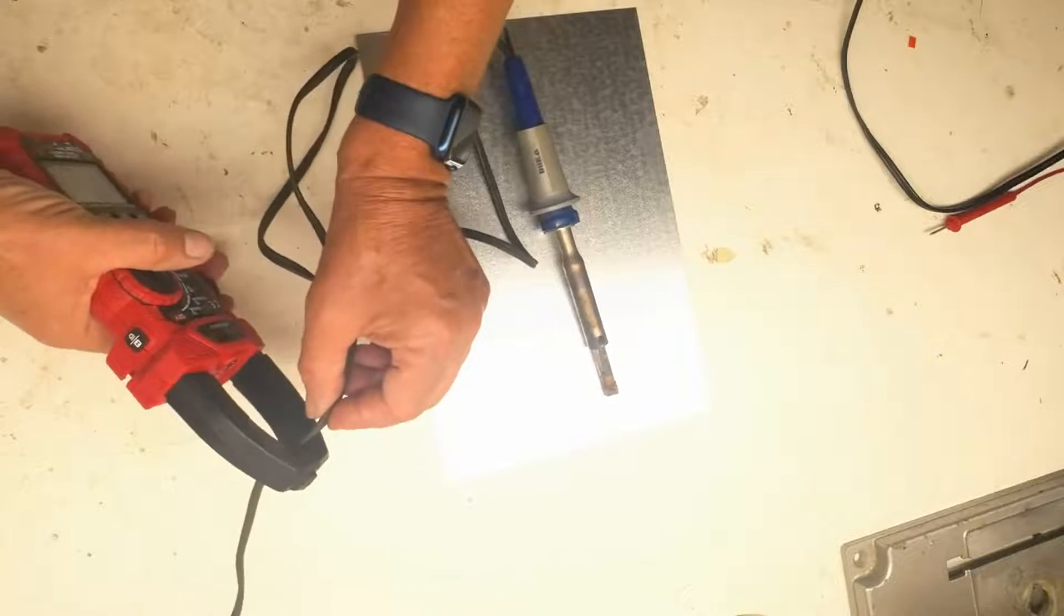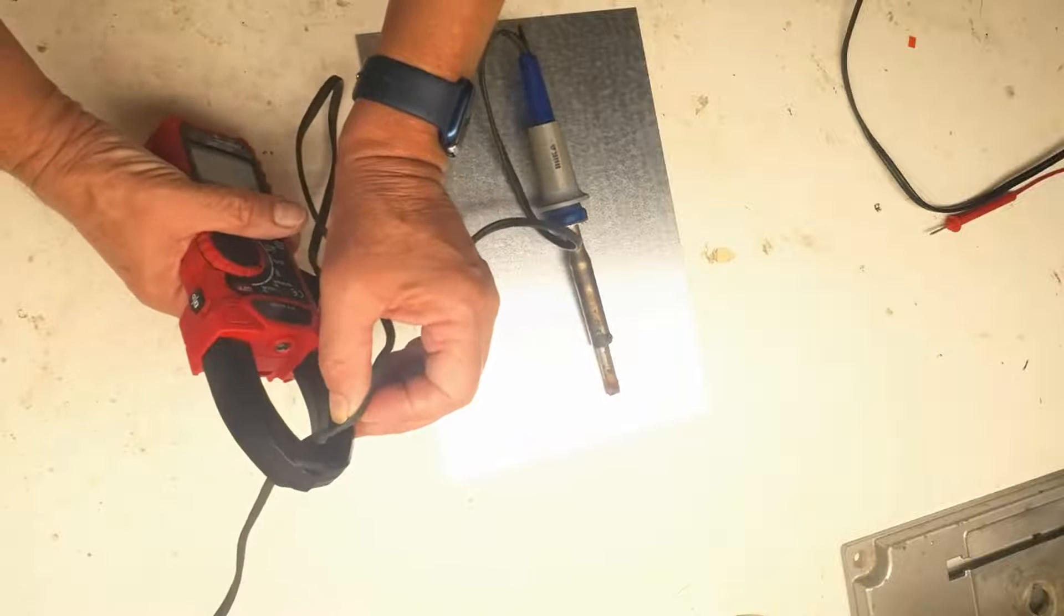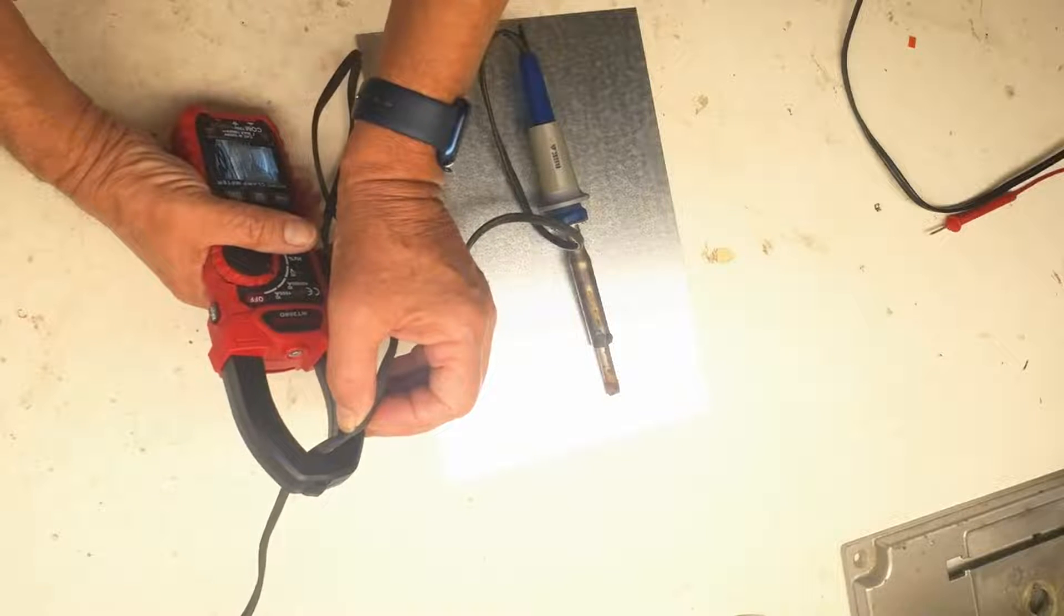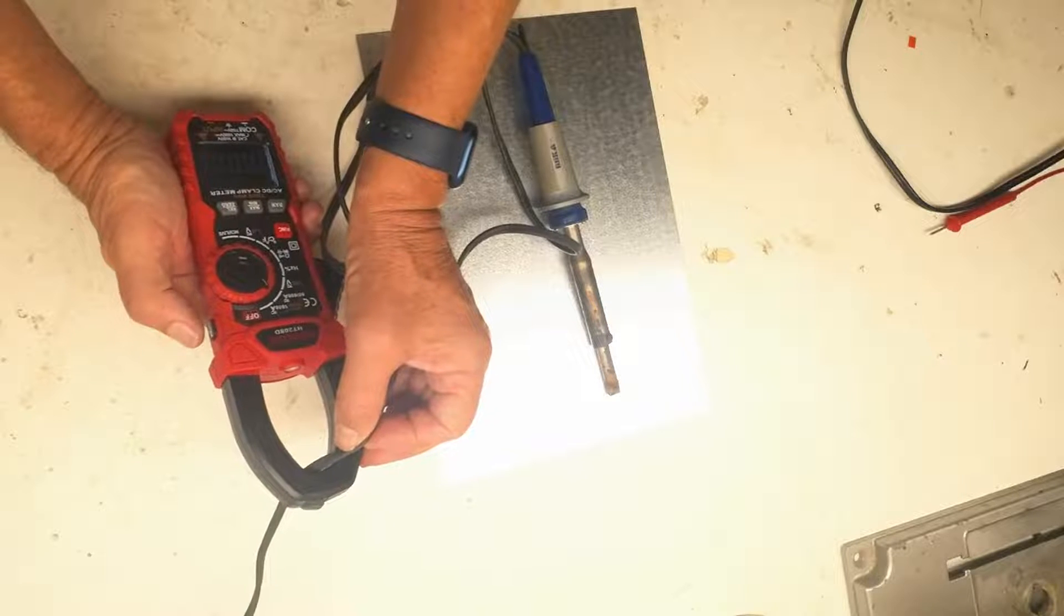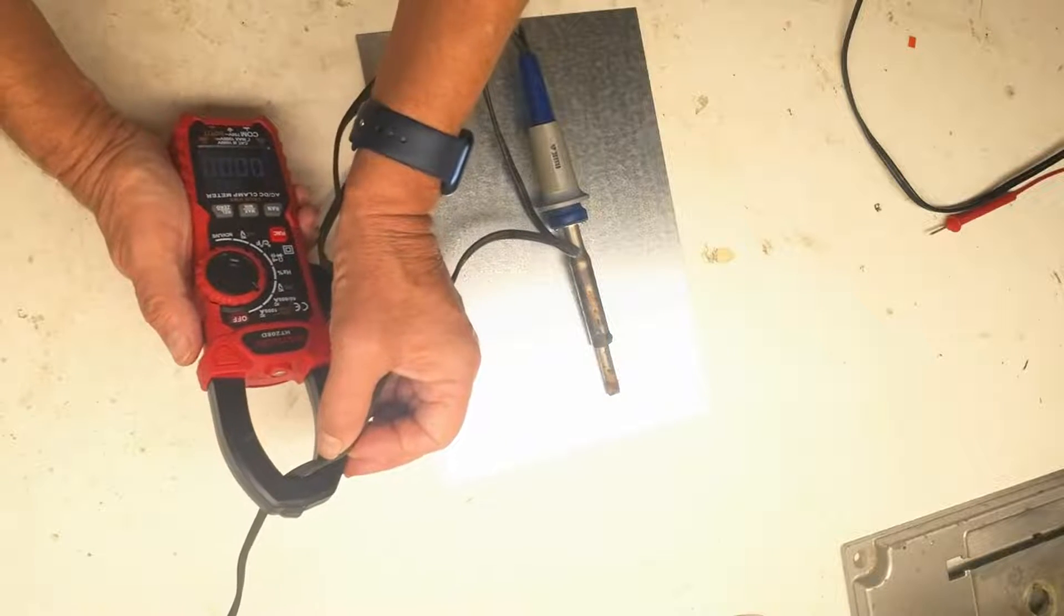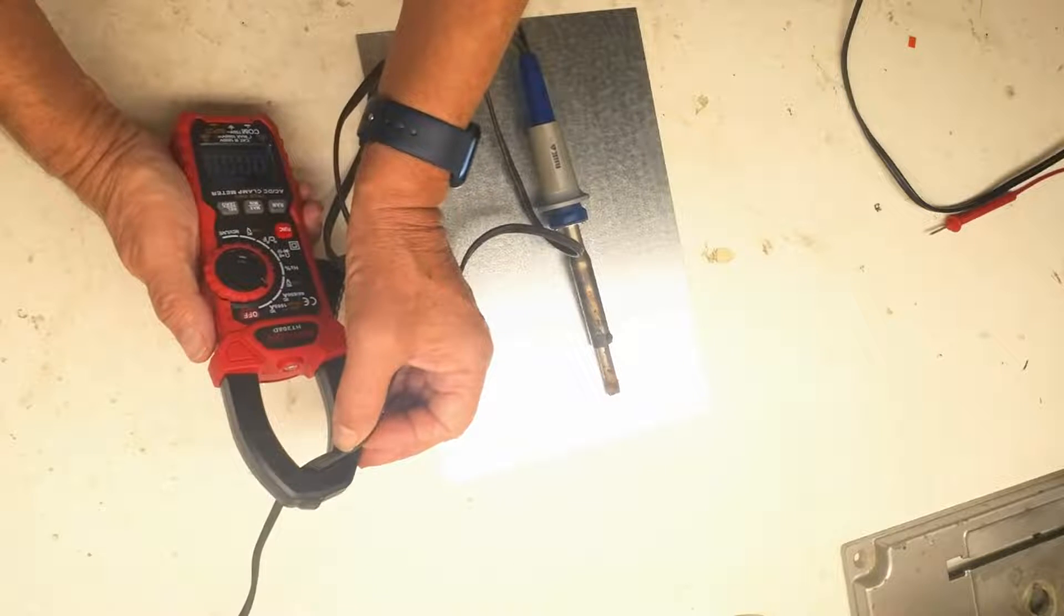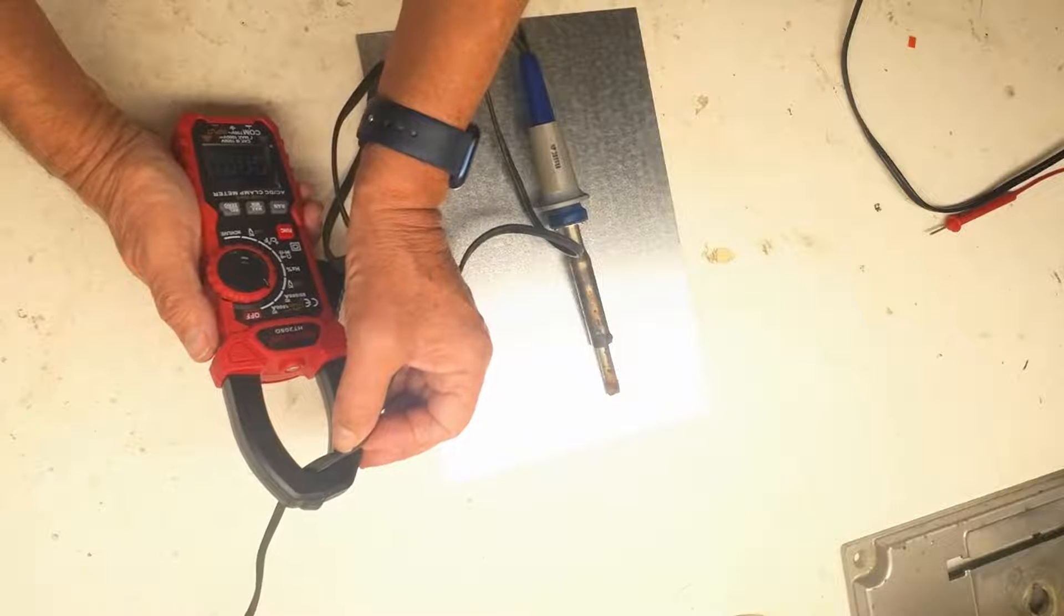You just put it around the cord like this, and then start up the motor, and there's a button here that you can make it just record the highest draw, so that you know how much power is being drawn by the motor when it first turns on.